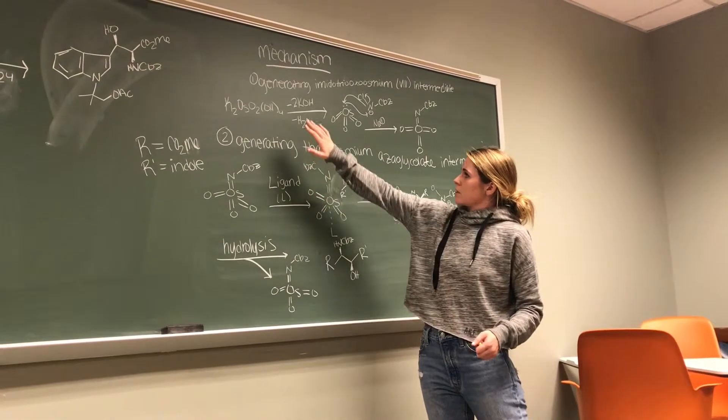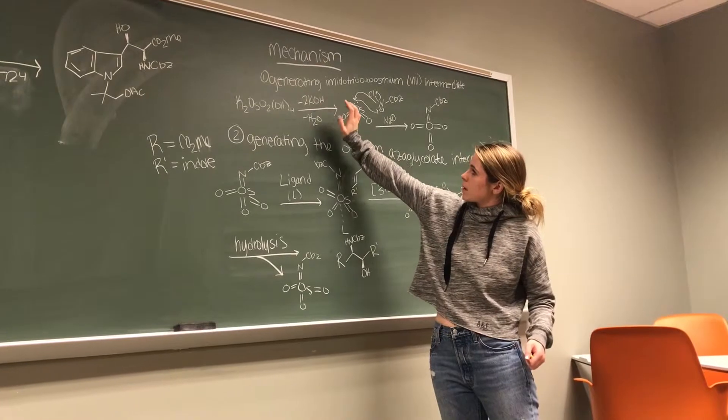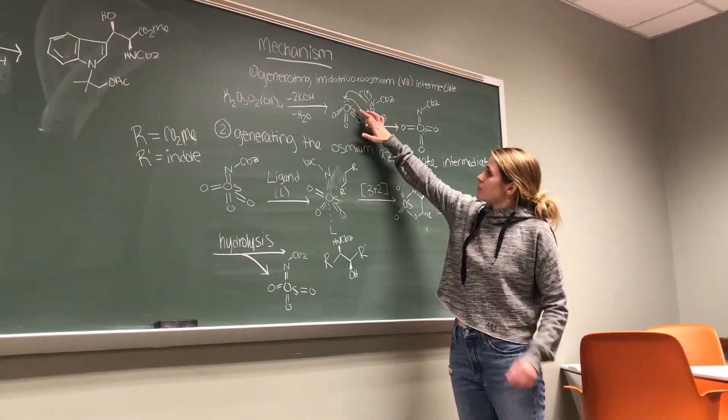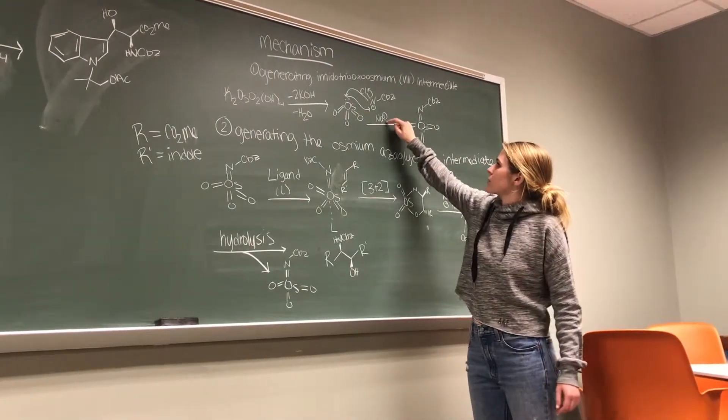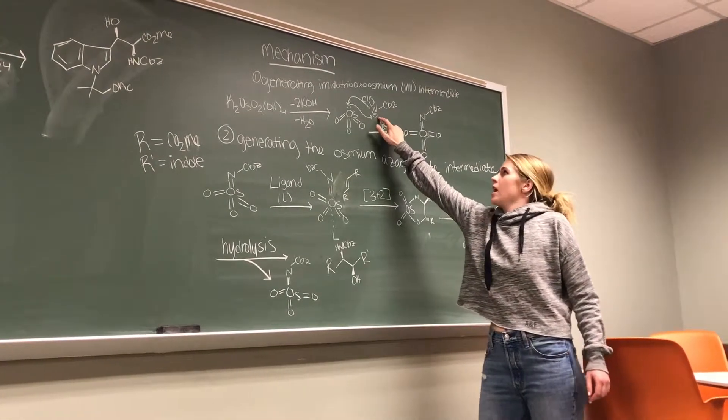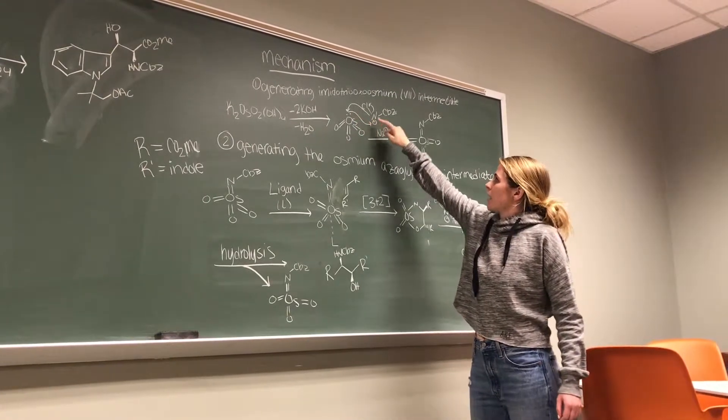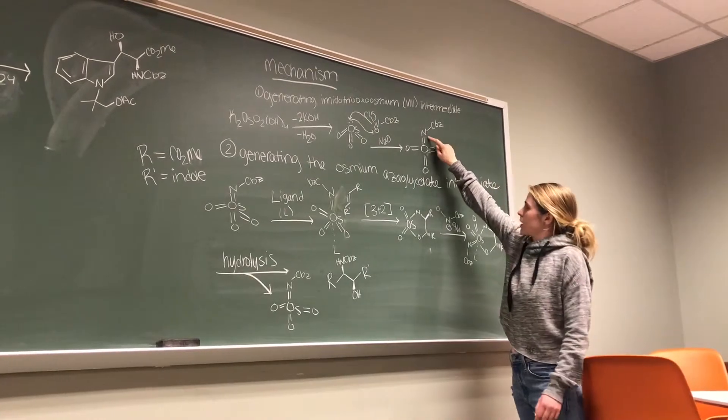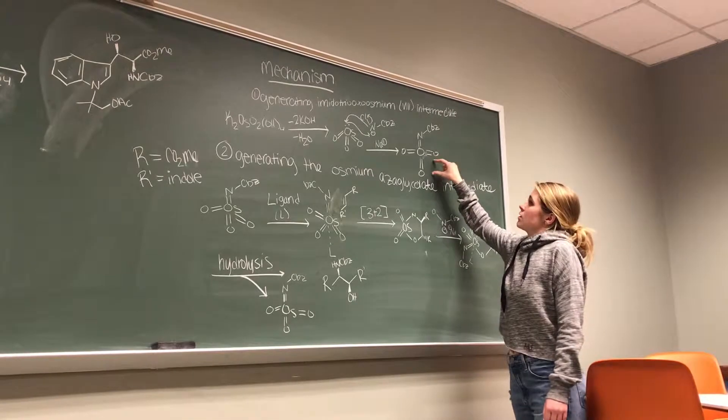So we start with our osmium tetroxide source. We lose two moles of potassium hydroxide in water to get this intermediate. And our osmium has a lone pair. And we also have our salt source come in and the sodium dissociates from the nitrogen. And so we end up with a negatively charged nitrogen. And remember, we have our good leaving group here. So these electrons will come in and kick off this chlorine and form a double bond between the nitrogen and the osmium. And this is the key imidotrioxide osmium intermediate.